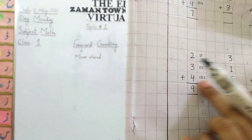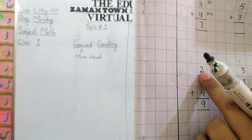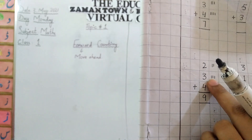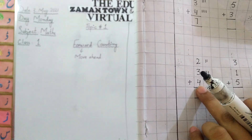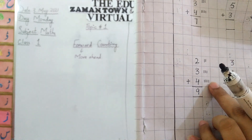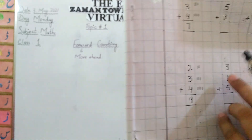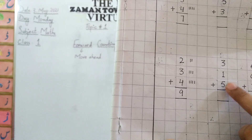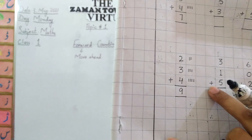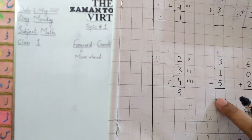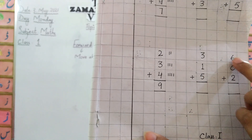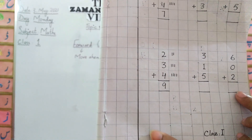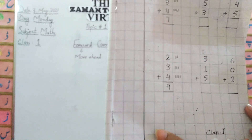For question five: three, one, five — this is the sign of addition, solve by yourself. And last, question six: six, zero, two — sign of addition, and there is an empty box. You will solve by yourself.